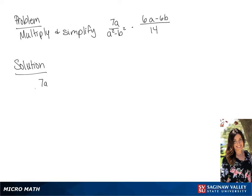We are going to multiply these two fractions. We're going to start by factoring the denominator of the first fraction, so we have a minus b times a plus b.